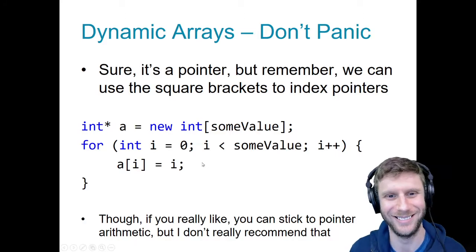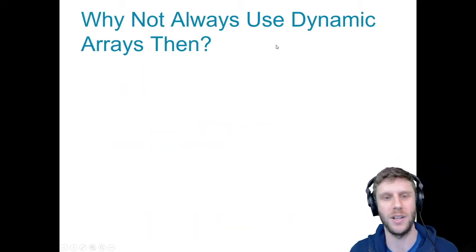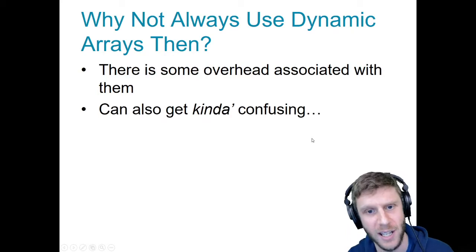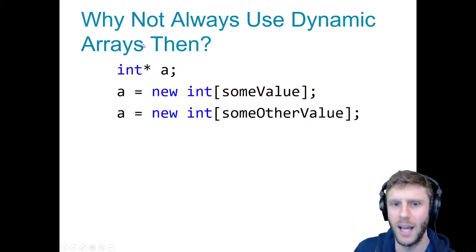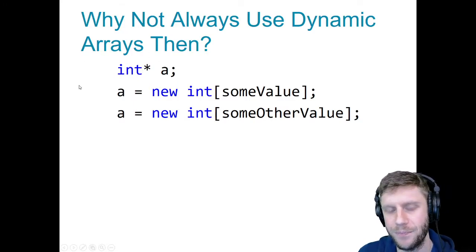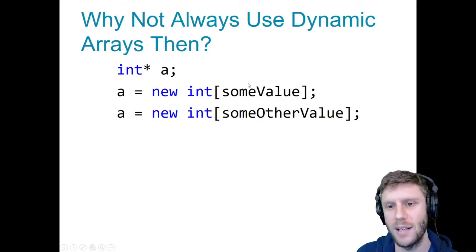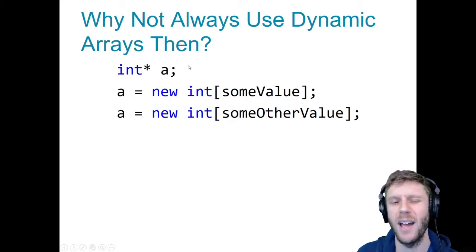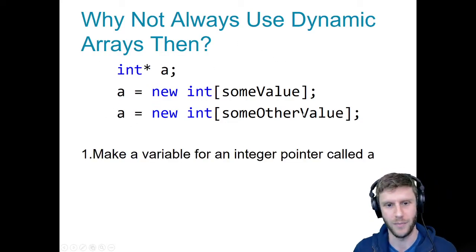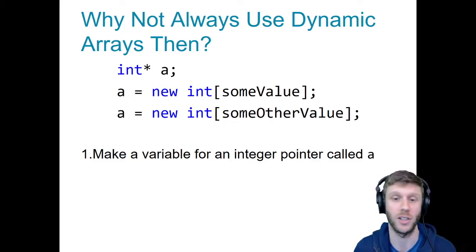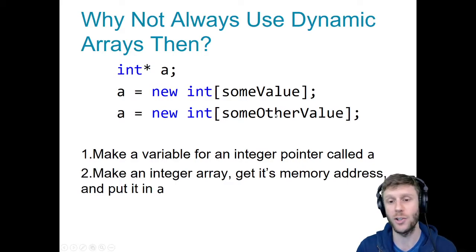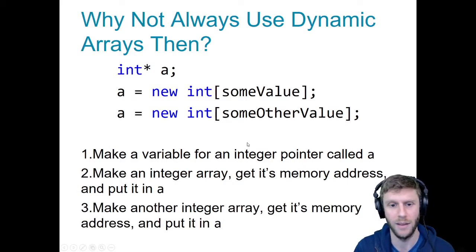So why not always use dynamic arrays? Well, there are some overhead associated with them. When I do int* a = new int[someValue], and then immediately I say a = new int[someOtherValue], here's what's happening: one, we made a variable for an integer pointer called a. Then we made an integer array, got its memory address, and put it in a. Then we made another integer array, got its memory address, and put it in a. This is bad.